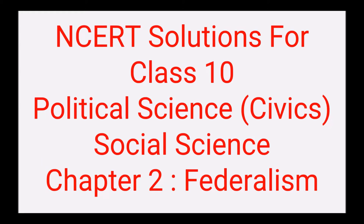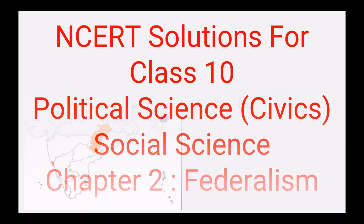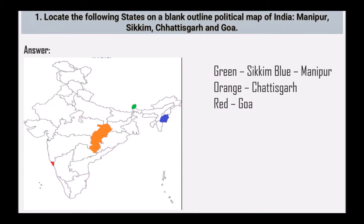For Class 10 Political Science, that is Civics, Chapter 2 - Federalism. Let's solve the textbook exercise. The first question is: look at the following states on a blank outline political map of India — Manipur, Sikkim, Chattisgarh, and Goa. So this is Sikkim, this is Manipur, this is Chattisgarh, and this is Goa.